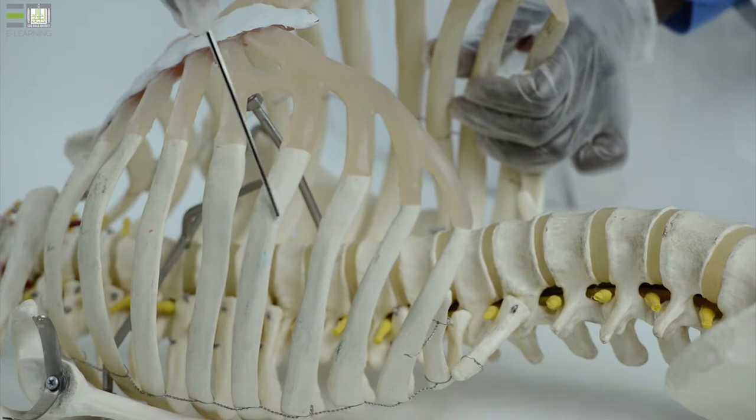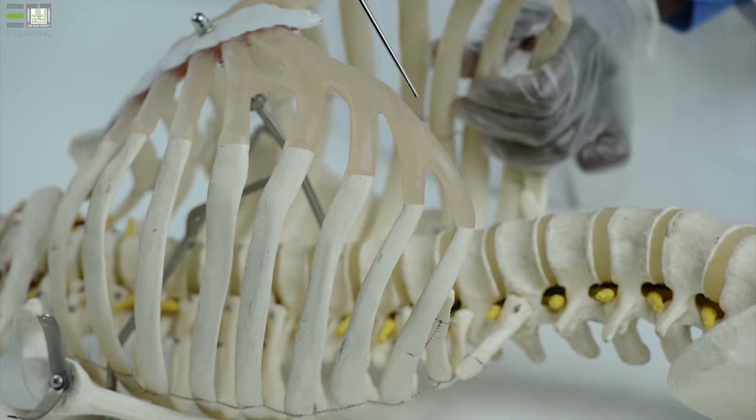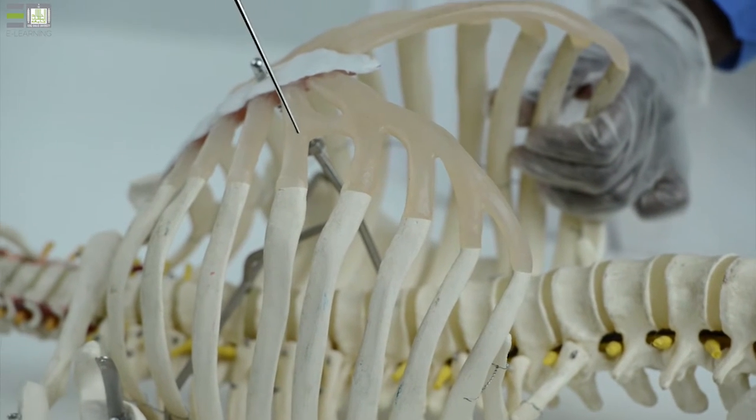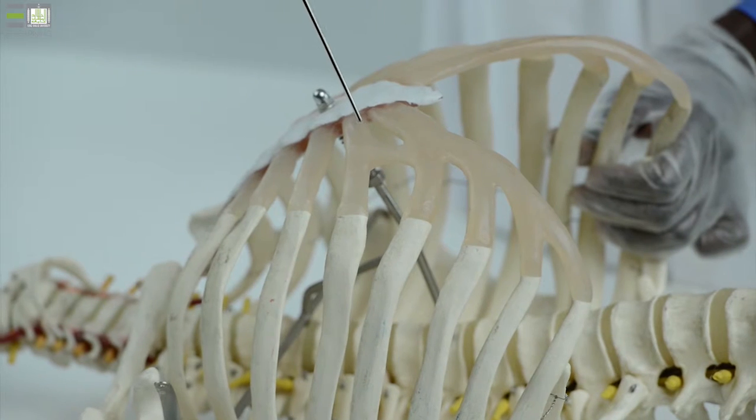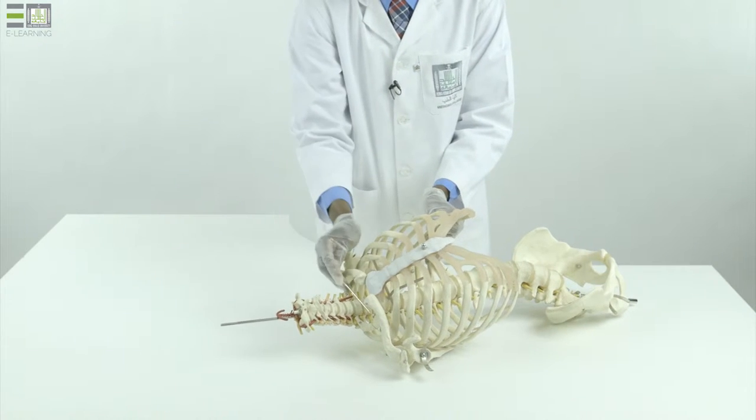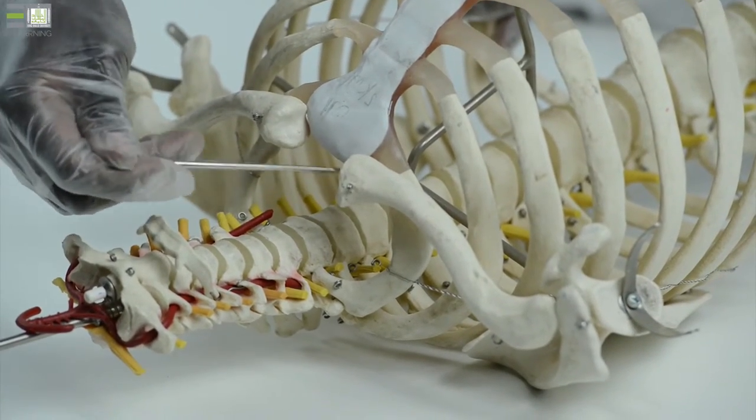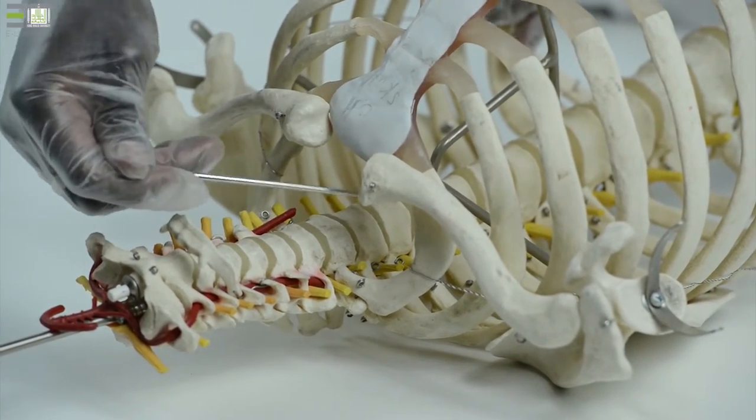The false ribs—eight, nine, and tenth ribs—have indirect connection with the edge of the sternum through the seventh rib. The articulated thoracic cage has an upper aperture called inlet of the thorax or superior aperture.